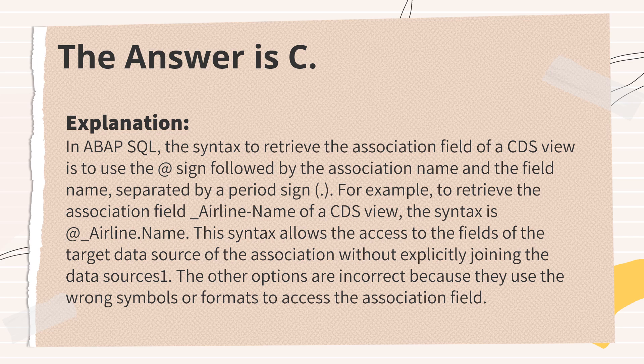The answer is C. In ABAP SQL, the syntax to retrieve the association field of a CDS view is to use the at sign (@) followed by the association name and the field name, separated by a period. For example, to retrieve the association field _airline_name of a CDS view, the syntax is @_airline_name. This syntax allows access to fields of the target data source of the association without explicitly joining the data sources. The other options are incorrect because they use the wrong symbols or formats.